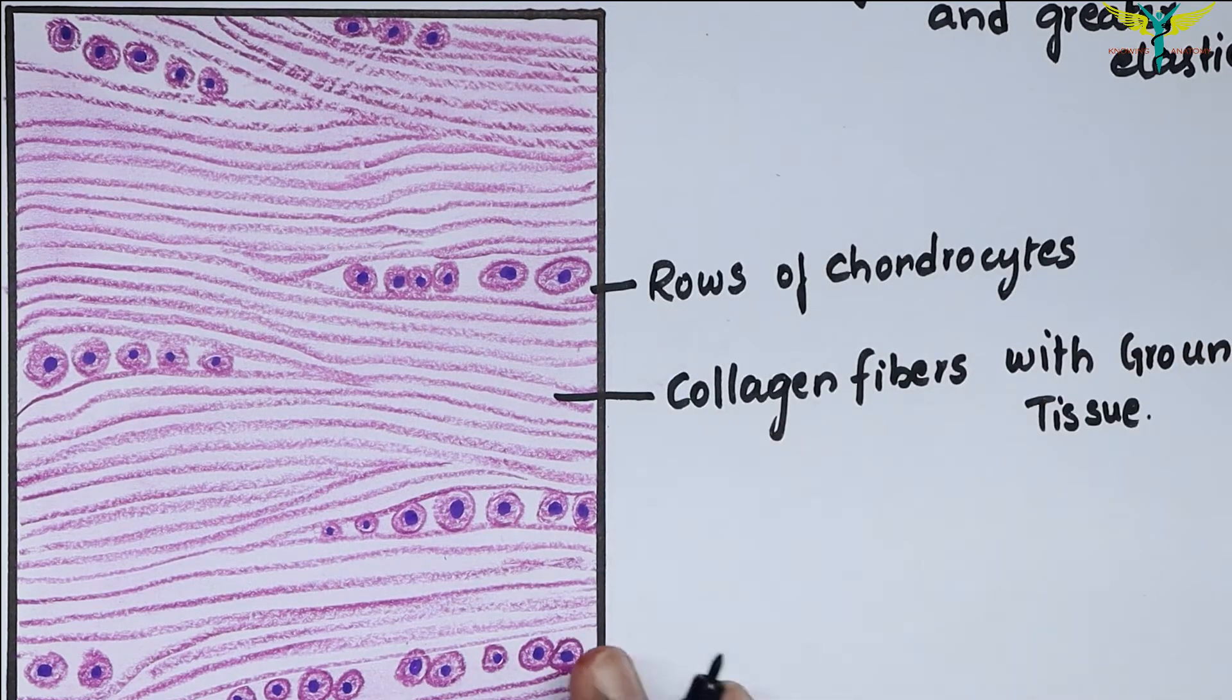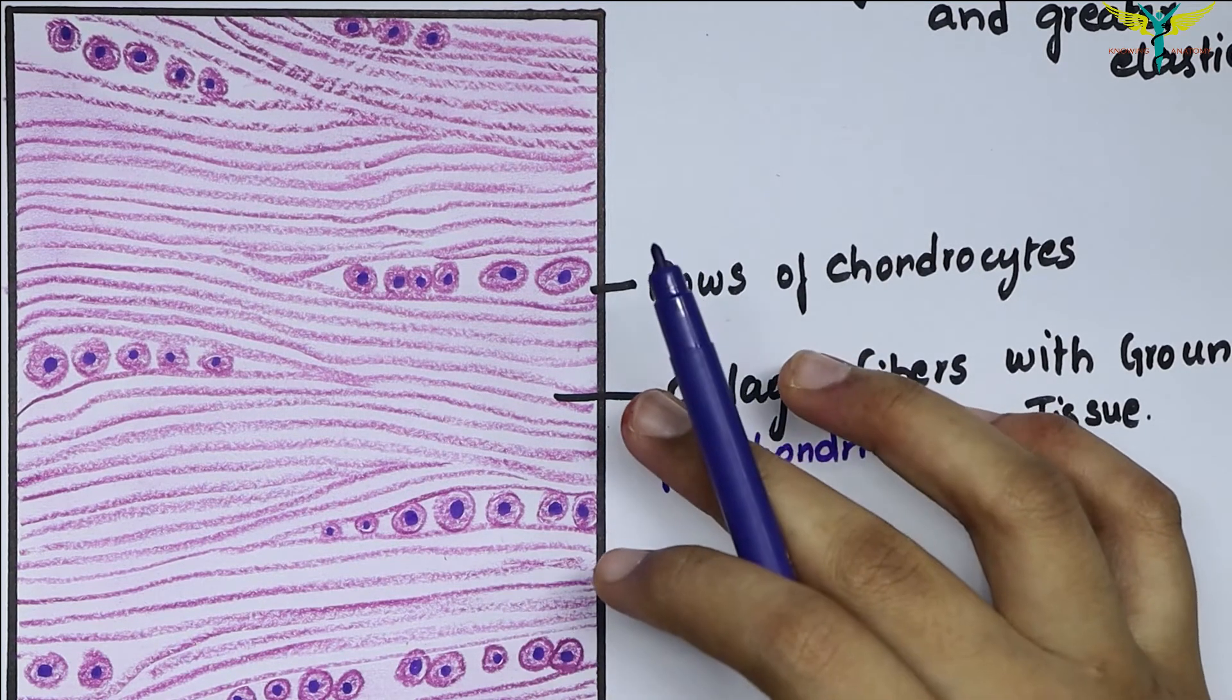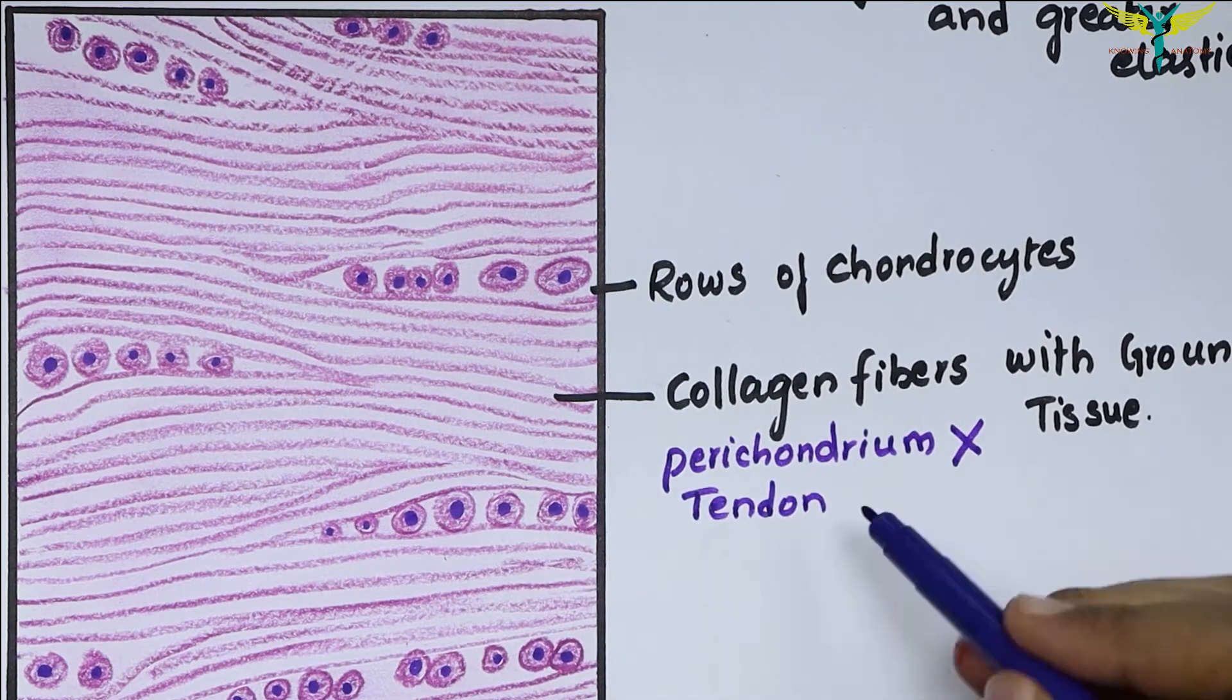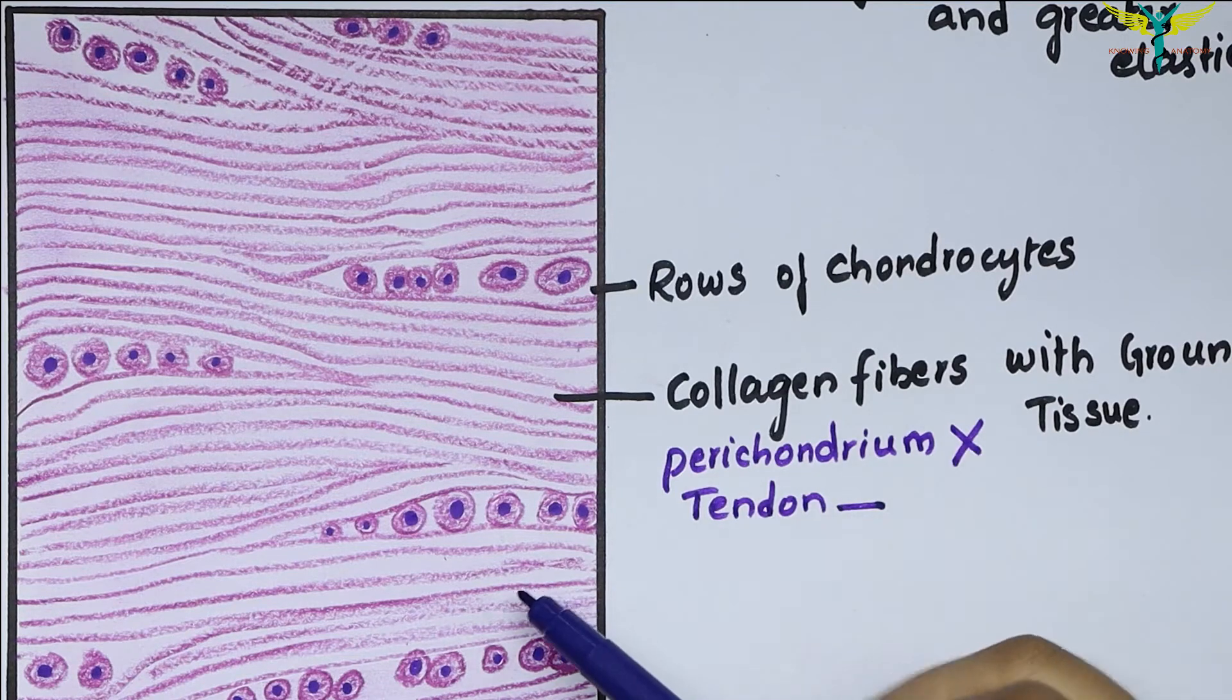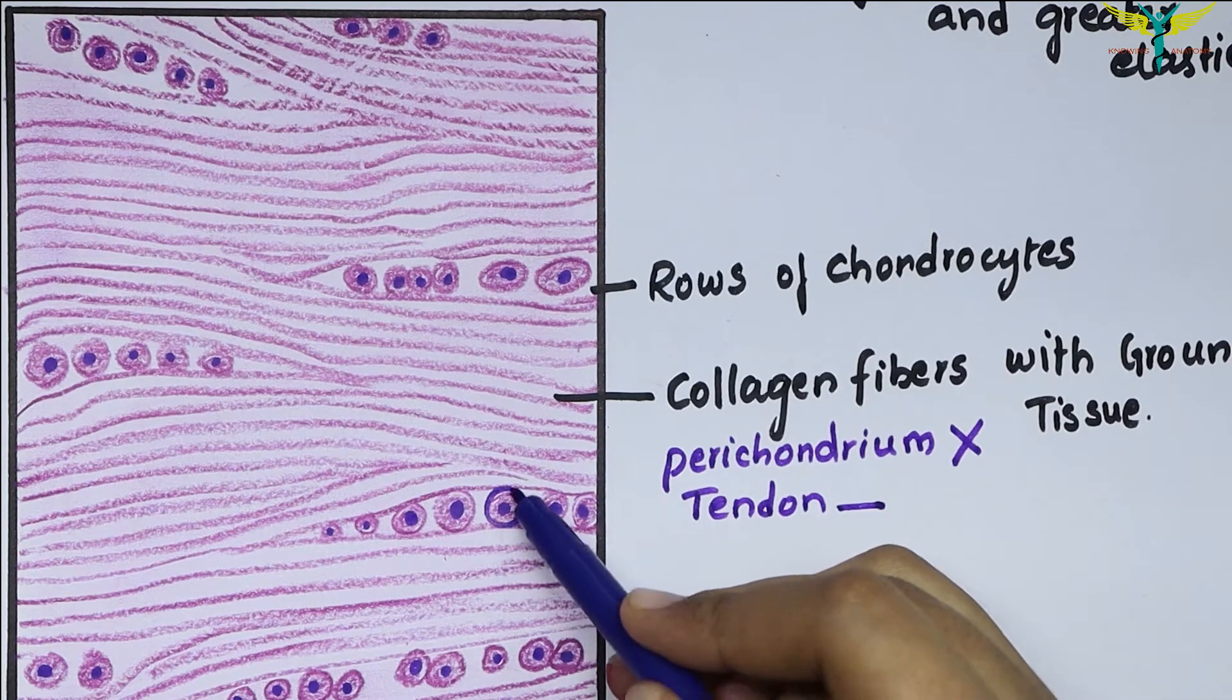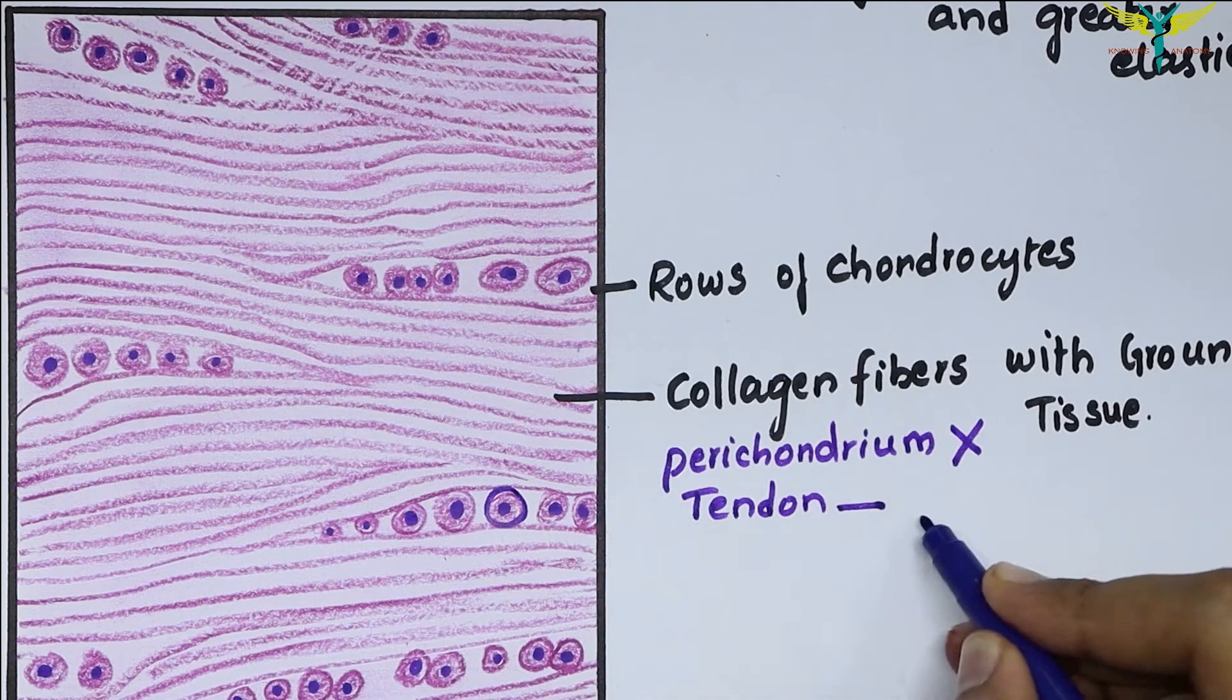The perichondrium is absent in fibrocartilage. This cartilage can be confused with the appearance of a tendon. For differentiation, remember the chondrocytes in fibrocartilage are round in shape, whereas the fibrocytes are flattened and elongated in tendon.